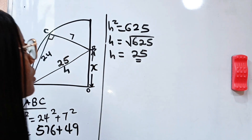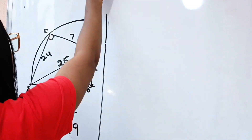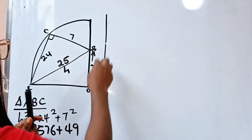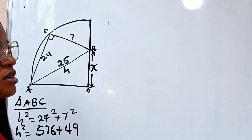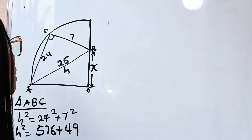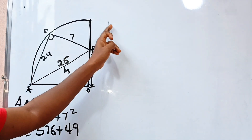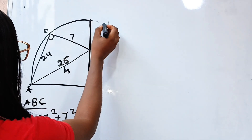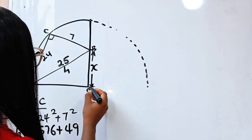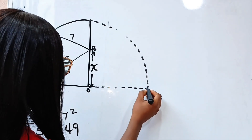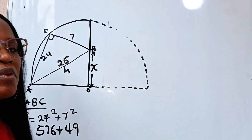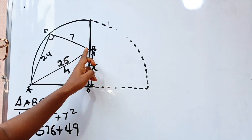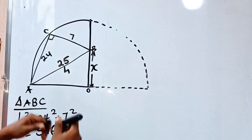Now we are actually asked to find X — that is from B to O. To do this, we complete the quarter circle into a semicircle, and extrapolate CB to reach the other side, calling that new point D.